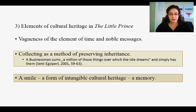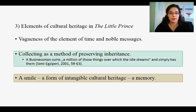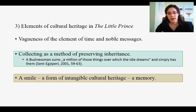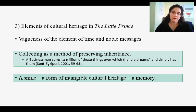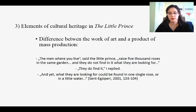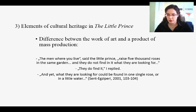Elements of cultural heritage in The Little Prince are everything that makes this book timeless — from the vagueness of the element of time in the tale itself, to the noble messages embodied in every acquaintance The Little Prince meets during his journey. Collecting, as a method of preserving inheritance, appears in the book through the appropriation of stars — possessions on paper of the one who first thinks of appropriating them. The gift of The Little Prince to the pilot — a smile — is something elusive and abstract, which can be understood as intangible heritage, as a form of cultural heritage, a memory. The book also introduces a difference between a work of art and the product of mass production, related to the problem of materialism affecting the taste of society.